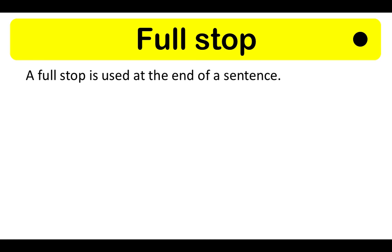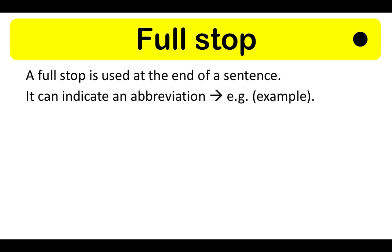A full stop is used at the end of a sentence. It can also indicate an abbreviation. For example, 'e.g.' is the abbreviation for 'example'. A full stop is always followed by a capital letter at the start of the next sentence.